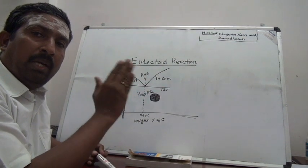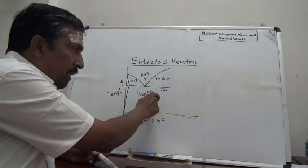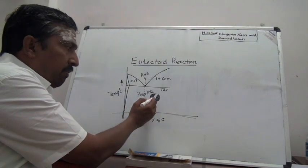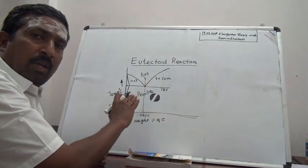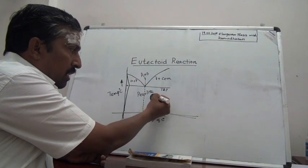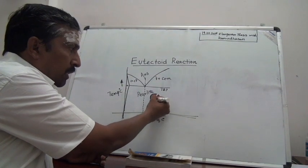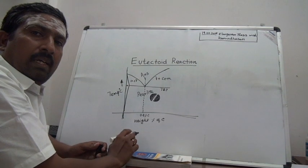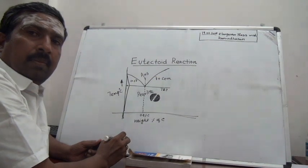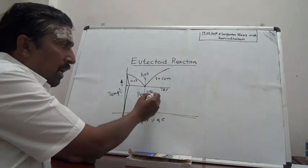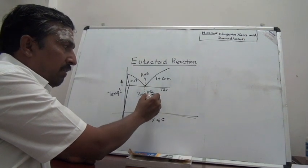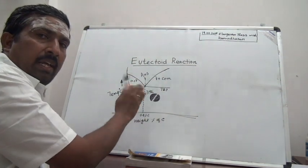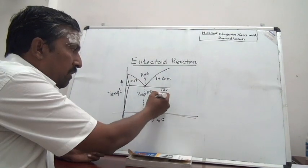When austenite transforms into ferrite in a small layer, the excess carbon comes out and accumulates in the adjacent layers on both sides. This small layer becomes a ferrite layer, while the excess carbon accumulates in the adjacent layers on both sides, increasing the carbon content. When the carbon content in the adjacent layer reaches 6.67 percent, that layer is converted into cementite. Therefore, while a small layer is converted into ferrite, the adjacent layers are converted into cementite.